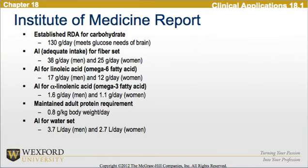The maintained adult protein requirement is approximately 0.8 grams per kilogram body weight per day. And the adequate intake for water is 3.7 liters per day for men and 2.7 liters per day for women.